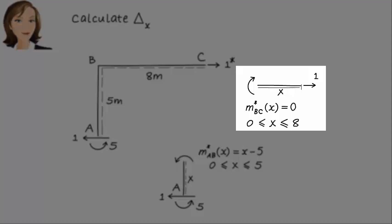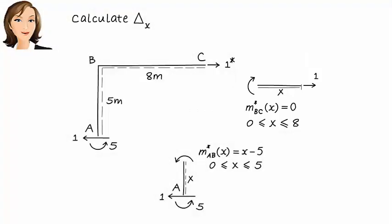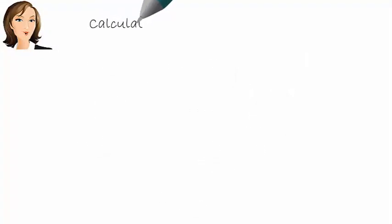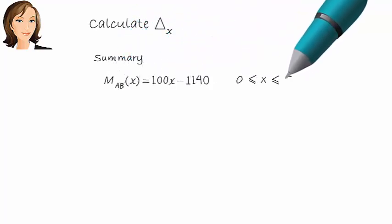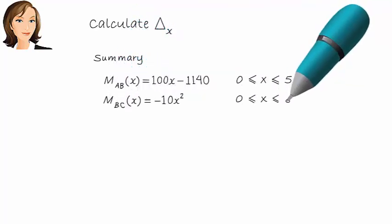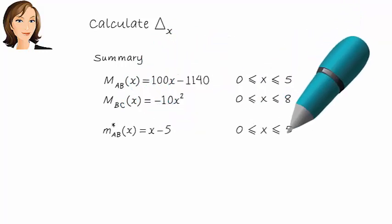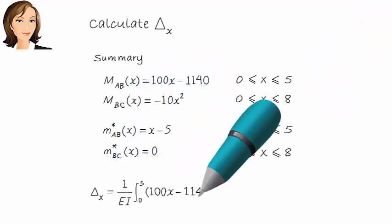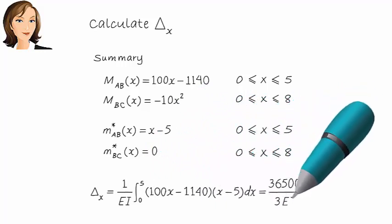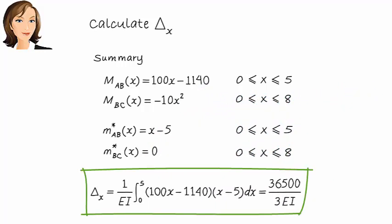To get delta x, we need to integrate M times M star. Here is delta x. Now, let's calculate delta y.